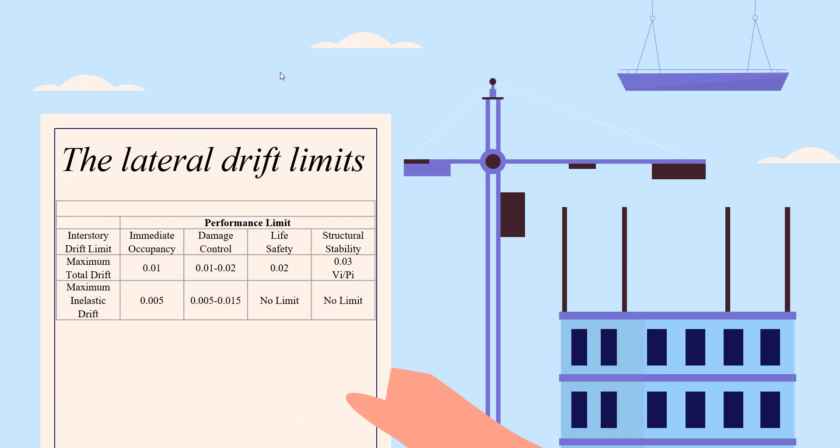The first performance criteria is the lateral drift limits. For example, in this table, for immediate occupancy, the maximum total drift is 0.01. And for damage control, the maximum total drift is between 0.01 and 0.02. For life safety, the maximum total drift is 0.02.